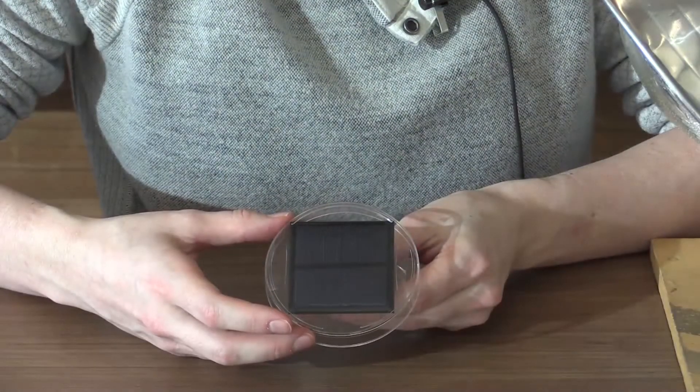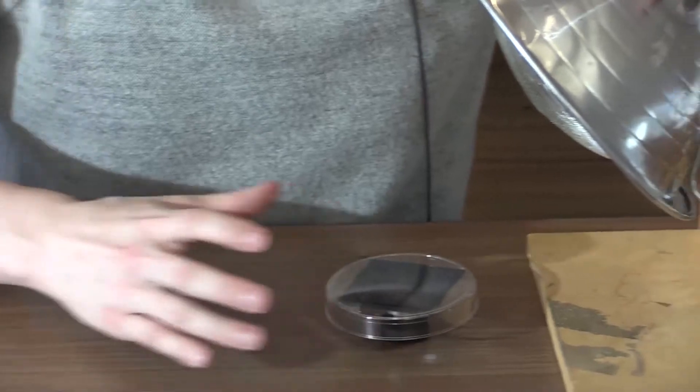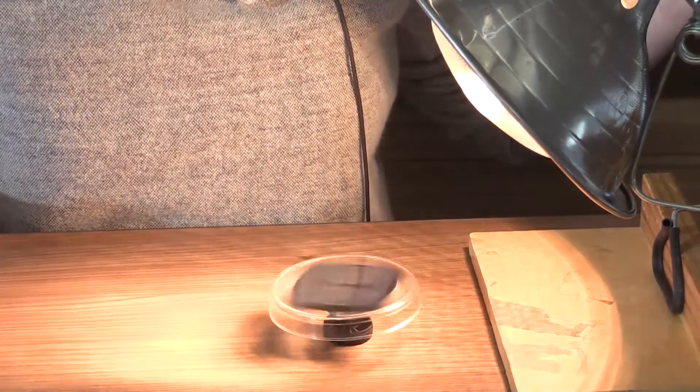Now we're ready to test our final solar spinner one more time. We'll go ahead and set it down underneath the light, turn on the light and it should spin.